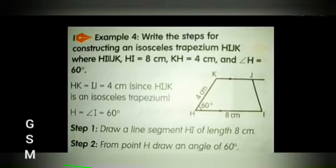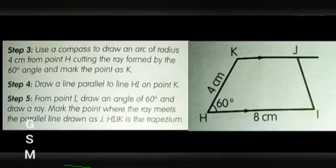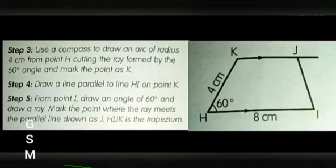Step 2: From point H, draw an angle of 60 degrees. Step 3: Use a compass to draw an arc of radius 4 cm from point H, cutting the ray formed by the 60-degree angle, and mark the point as K. Step 4: Draw a line parallel to HI on point K. Step 5: From point I, draw an angle of 60 degrees and draw a ray; mark the point where the ray meets the parallel line as J. Join all points; HIJK is the trapezium.